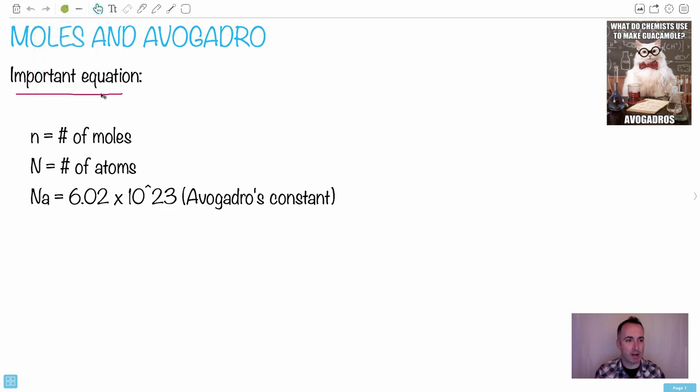The equation we're going to need for this is in your data booklet. It goes n equals capital N over Na. This is the equation you need. Luckily, you don't have to memorize it; it's there for you in your data booklet.